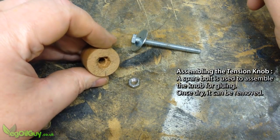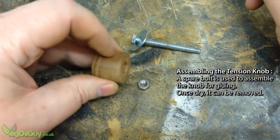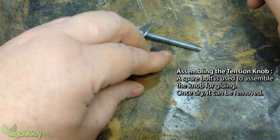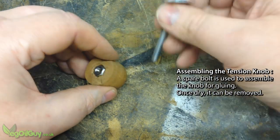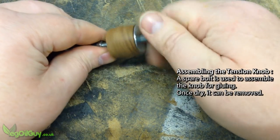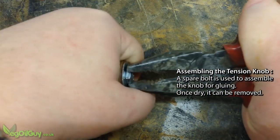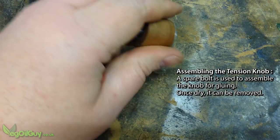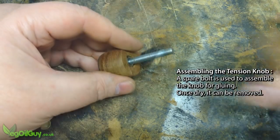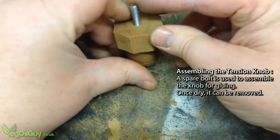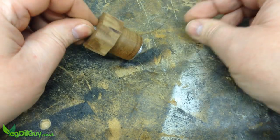A hex shape was chiselled into the cylinder and a nut fit nicely inside this. Using a spare bolt, tightening the bolt draws the nut firmly into the chiselled hole. The upper section can then be glued on, being careful not to get any glue on the thread.